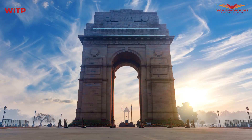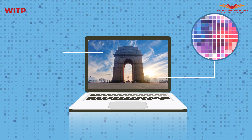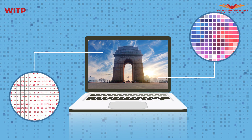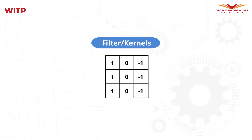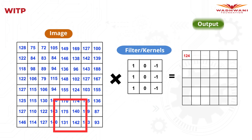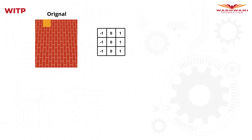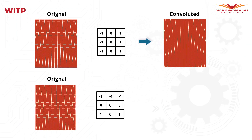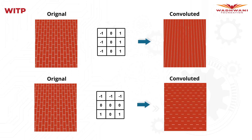Researchers used to extract information from images using these numbers and some simple mathematical computations. They used a small grid of numbers called filters or kernels. When we pass these filters across an image doing some simple addition and multiplication, we get some interesting output. For example, passing one particular filter across an image gives only the vertical edges, and passing another filter gives only the horizontal edges.